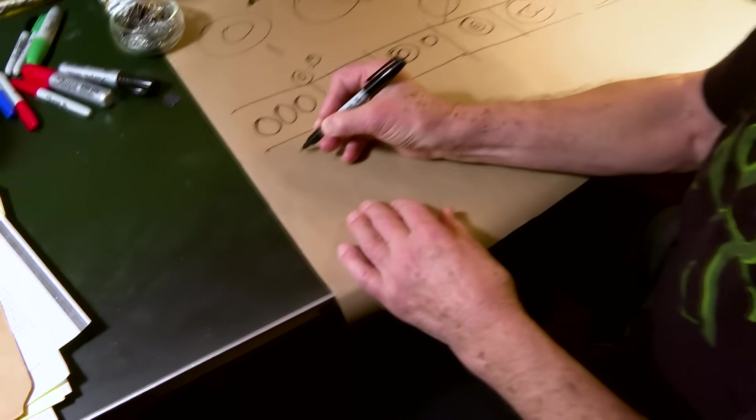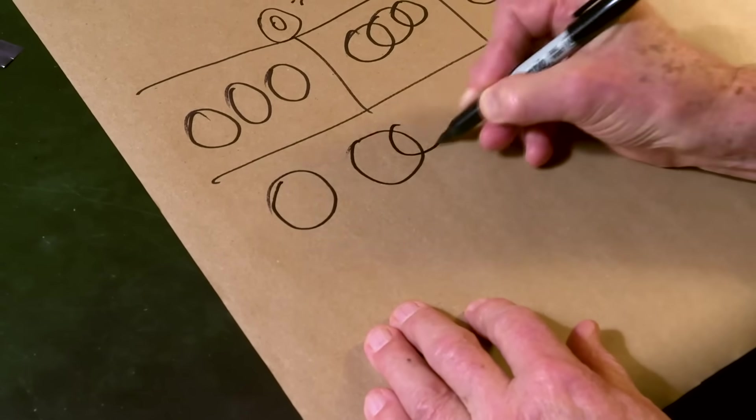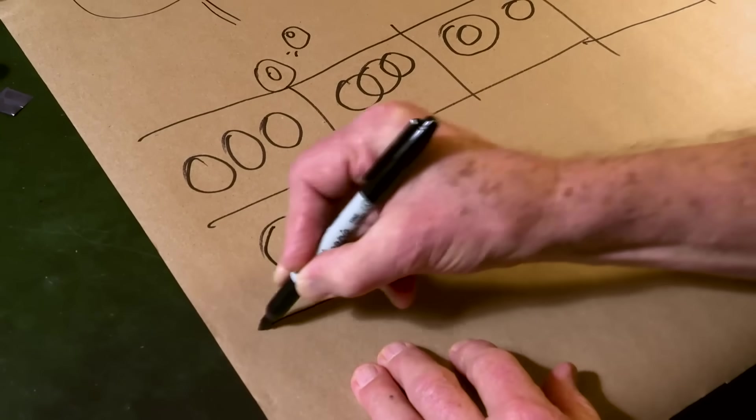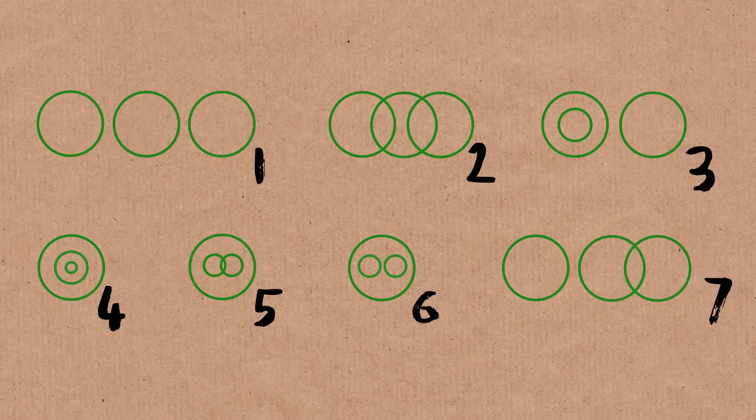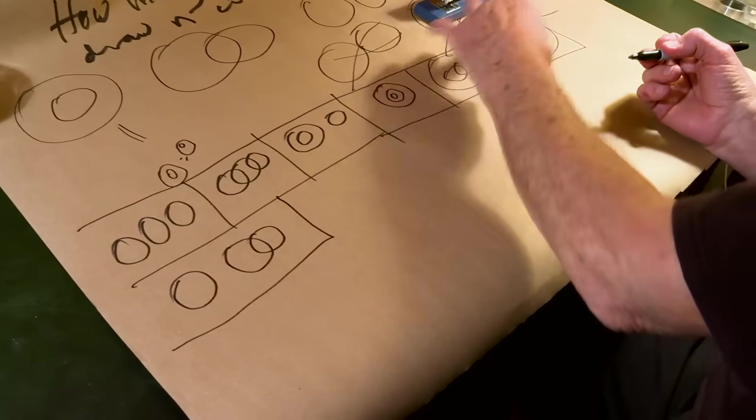And then we could put a circle next to one of them. So now we have seven. One, two, three, four, five, six, seven. We're halfway there.